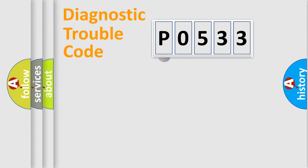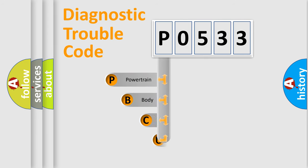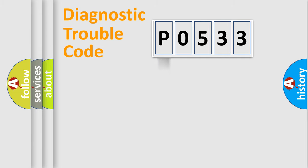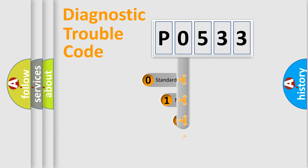First, let's look at the history of diagnostic fault code composition according to the OBD2 protocol. We divide the electric system of an automobile into four basic units: powertrain, body, chassis, and network. This distribution is defined in the first character of the code.